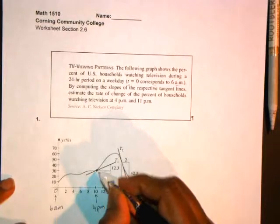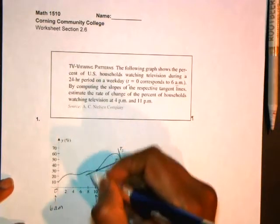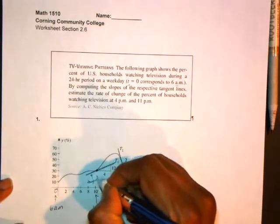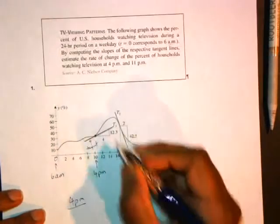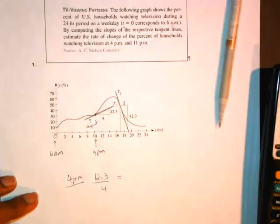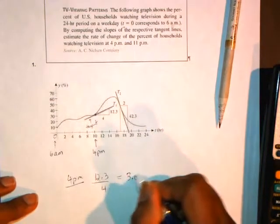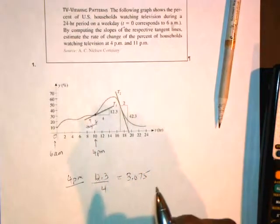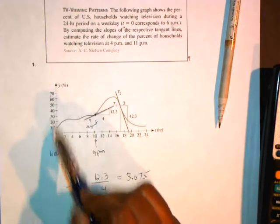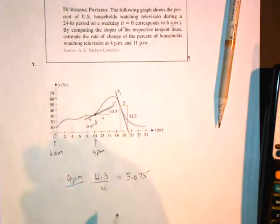So at this point, you already have in the picture a tangent line drawn for you on this curve. So there's your tangent line. And it already has a triangle with a rise over run. So for 4 p.m., you can see that it's 12.3 divided by 4, which you can put in your calculator. 12.3 divided by 4 is 3.075. What's the meaning of this? This is talking about the percent of households watching TV over time. Okay, so as you can see, it's increasing because 6 o'clock, people are coming home from work, catching the news or something like that.